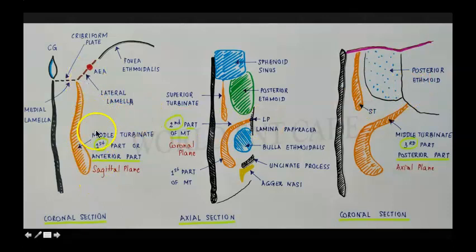Whereas the first part of the middle turbinate is present in a sagittal plane, second part is present in a coronal plane and the third part is present in an axial plane.